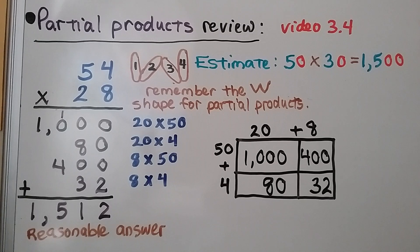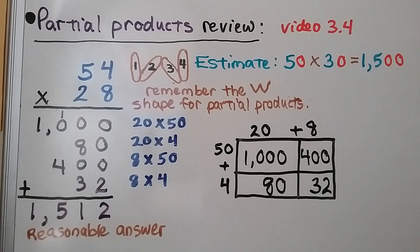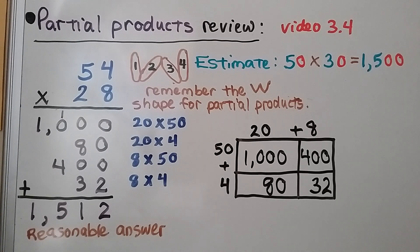Let's do a quick partial products review from video 3.4. We need to multiply 54 times 28, so the first thing we do is estimate. Our estimate is 1,500. We have the basic fact of 5 times 3, which is 15, and we have two zeros in the factors, so we have two zeros in the product — 1,500.